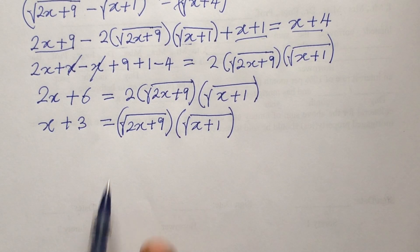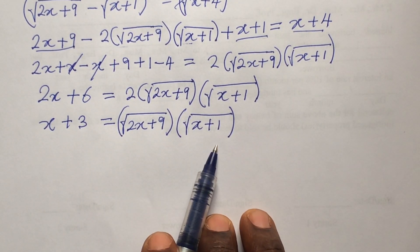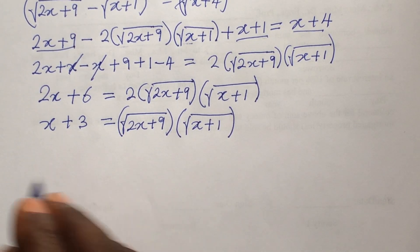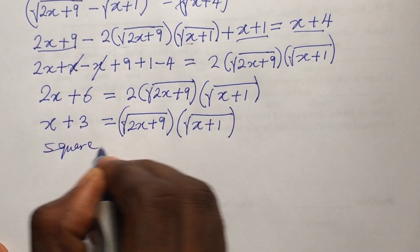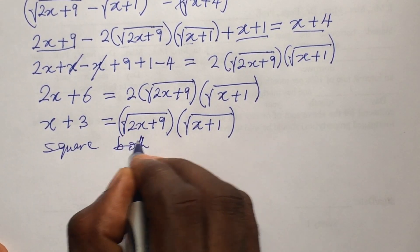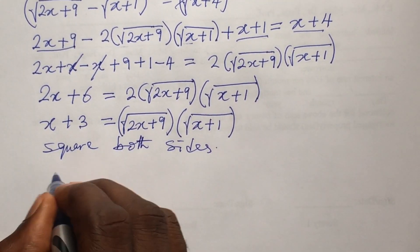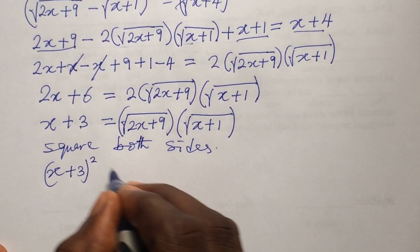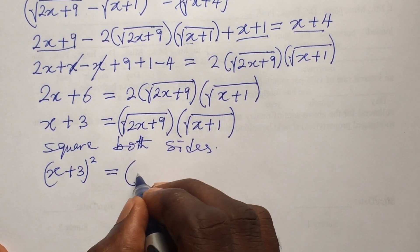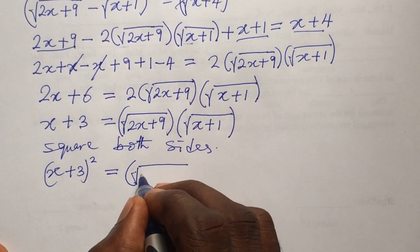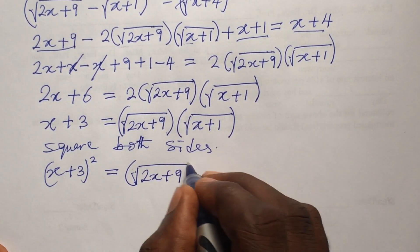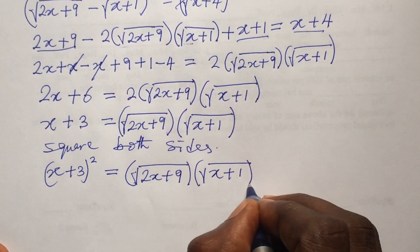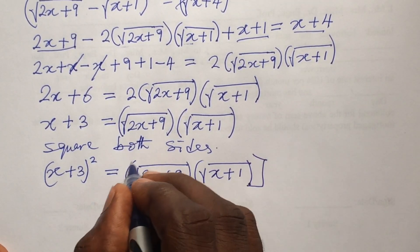At this point we cannot open this side of the equation further, so we square both sides of the equation again. We get (x plus 3)² on the left equal to (√(2x+9))² times (√(x+1))² on the right.